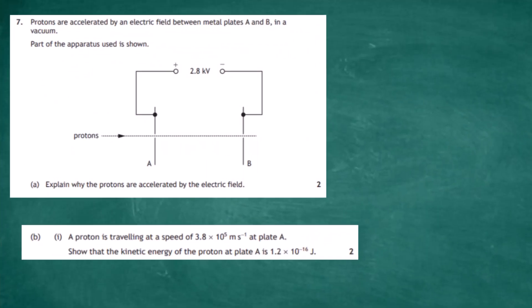Question 7, part b, part i. A proton is traveling at a speed of 3.8×10⁵ meters per second at plate A, and for two marks you have to show that the kinetic energy of the proton at plate A is 1.2×10⁻¹⁶ joules. We know the formula for kinetic energy: Ek is equal to one half times the mass times the speed squared.